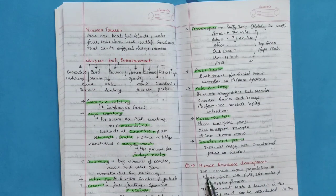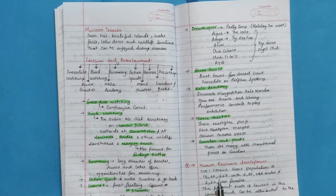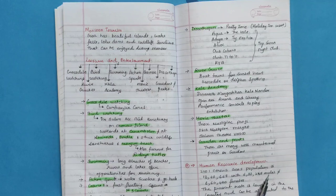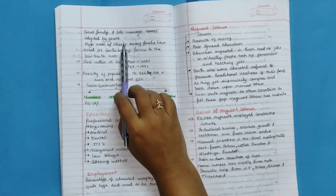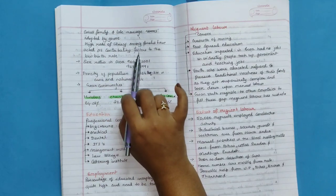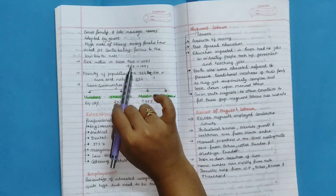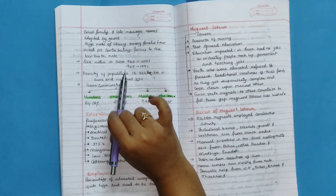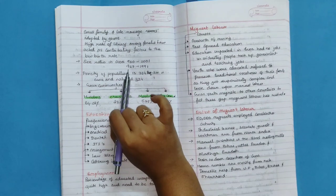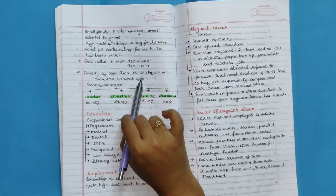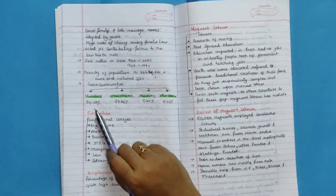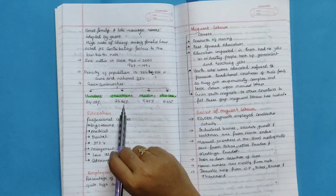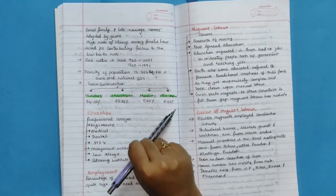Human resource development. 2001 census of Goa's population is 13,47,668, with 6,87,248 males and 6,60,420 females. The present rate is lowest in the country and can be attributed to the small family and late marriage norms adopted by Goans. High rate of literacy among females have acted as contributing factors to the low birth rate. Sex ratio in Goa in 2001, it was 960 and in 1991, it was 967. Density of population: 364 per square kilometer in Goa and national, it was 324. Goan communities: Hindu 64.68 percent, Christian 29.86 percent, Muslim 5.25 percent and other communities 0.03 percent.